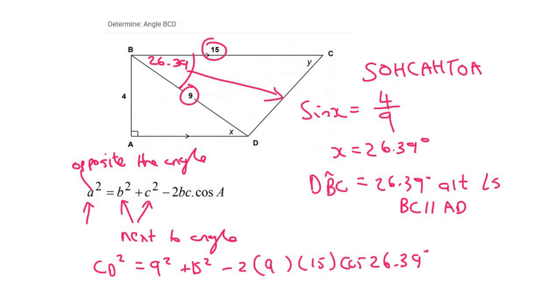Now don't round that number off, because it's not the final answer. So then CD will be the square root of that, and so CD is going to be 8.01.